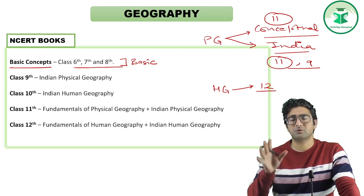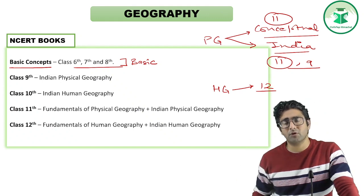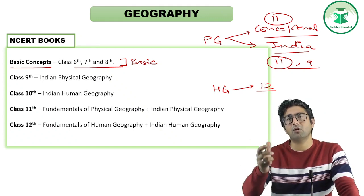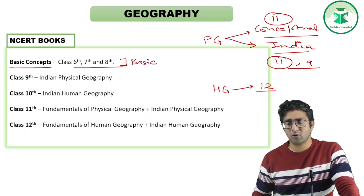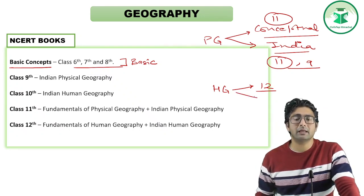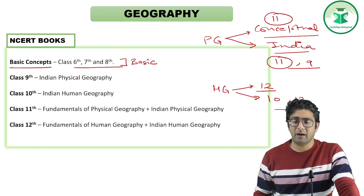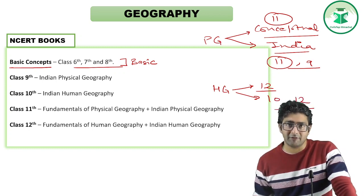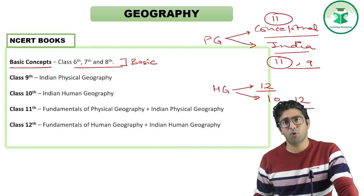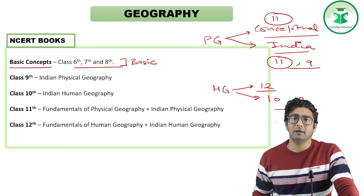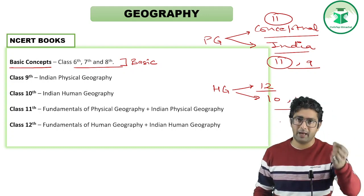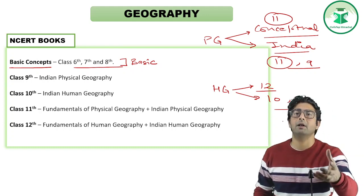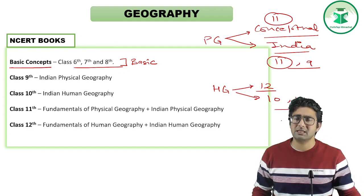For Human Geography, you also have a conceptual part. The 12th class NCRT named Fundamentals of Human Geography covers the concepts of how physical geography affects humans — how agriculture is done across the world, how physical features govern agriculture, where people do mining, where they set up industries. For applying these concepts to India, there are two books: Class 10 and Class 12 India-related NCRTs.